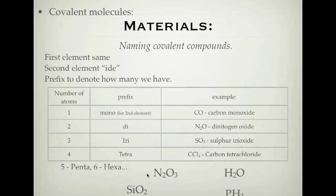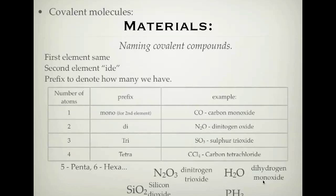Here are a few compounds to try yourself. We have two nitrogens and three oxygens in the first one. Please pause and write down what you think the names are going to be. The first one — two nitrogens and three oxygens — is dinitrogen trioxide. Next, H2O — the IUPAC systematic name is dihydrogen monoxide, which is just water. Then we have silicon dioxide, and phosphorus trihydride. Hopefully you got those right.